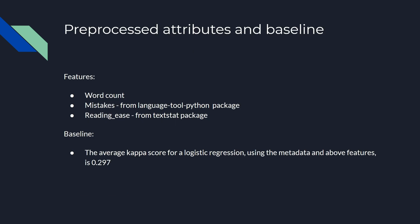Our pre-processed attributes were word count, which is the number of words; mistake count, which is the number of grammatical and punctuation errors; and reading ease, which comes from a package called TextStat that returns a metric for how easily the text is to comprehend. We ran a logistic regression using the engineered features, which gave us a cross-validated kappa score of around 0.29.